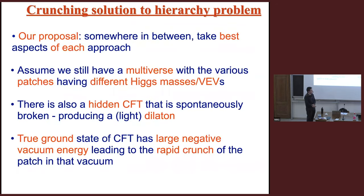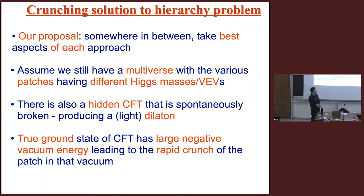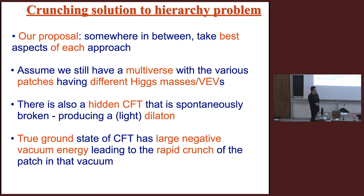I'd like to offer something slightly different from these approaches — what we call the crunching solution. Taking the big picture view, our proposal is a mixture of these ideas, taking what we think are the best aspects of each. We will still assume there is a multiverse with many different patches where the Higgs mass and Higgs VEV are very different. That starting point we keep. Where we deviate from the anthropic approach is that we will not argue that we can only live in particular patches.